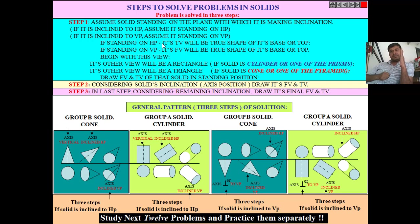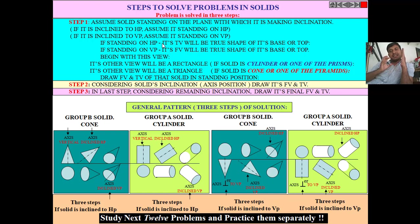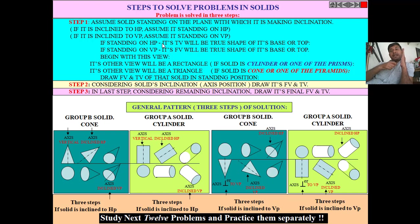For a cylinder standing on a plane, one view shows the true shape of the base and the other view is a rectangle. For a cone, one view is a circle and the second is a triangle. For prisms, one view is the true shape of the base and the other looks like a rectangle. For a triangular pyramid, one true shape is triangular and the second view is also triangular. For a pentagonal pyramid, one view is a pentagon and the second is triangular.